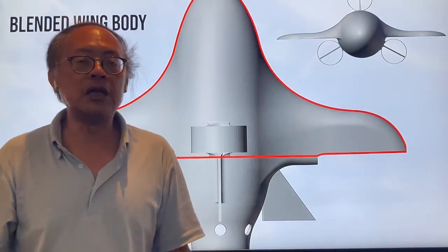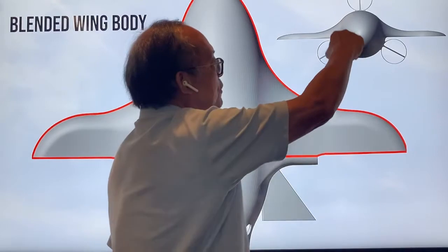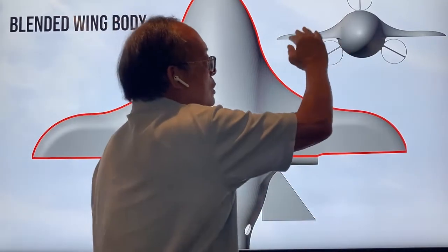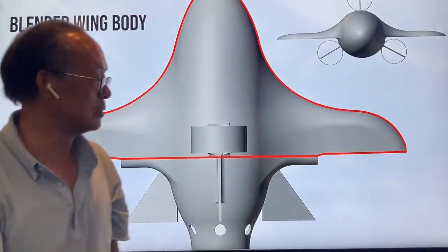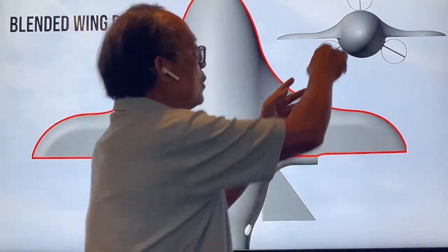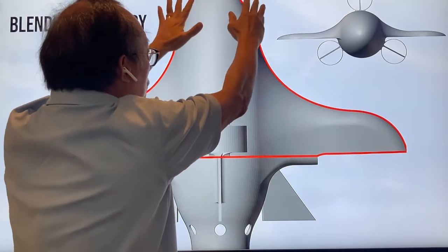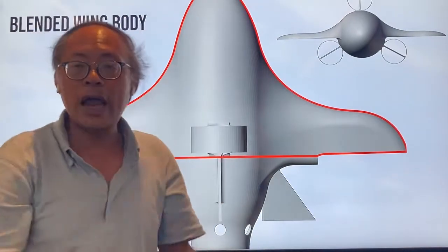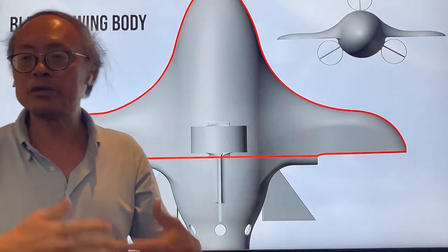A major breakthrough in our design is the blended wing body concept. We have an elliptical fuselage that is blended together with the two wings so that this whole area will provide a much bigger uplifting force to counter the weight of the vehicle. The blended wing body concept is also assisted by positioning the propellers on the side of the airplane towards the back, so that the flow of air will be laminar over the entire fuselage as well as the wings, making the air less turbulent and creating a much more laminar flow of air.